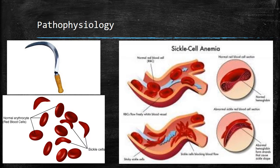A trigger causes cells to sickle — such as fever, dehydration, stress (emotional or physical), hypoxia, or infection. Basically, anything that increases the body's need for oxygen can trigger sickling. Once sickled, cells occlude blood vessels, causing local tissue ischemia and infarction, eventually damaging tissues and organs. The spleen is the first organ clogged with sickle cells, and children are functionally asplenic by age 6, placing them at risk for infection. Stroke is also a significant risk. Sickle cells can resume normal shape when rehydrated and reoxygenated, though this shortens their lifespan by 15 days. Continuous formation and destruction of red blood cells leads to severe hemolytic anemia.